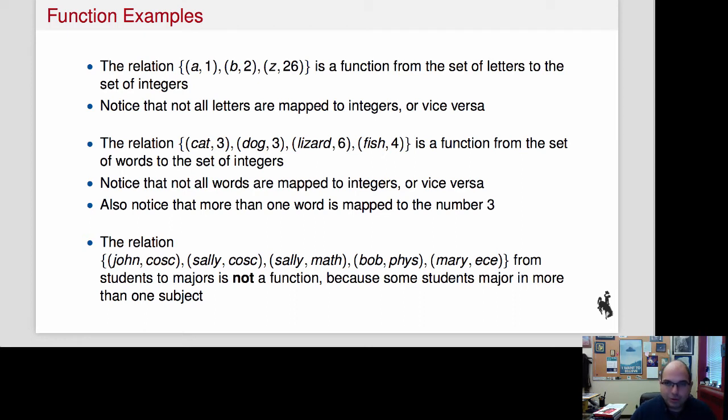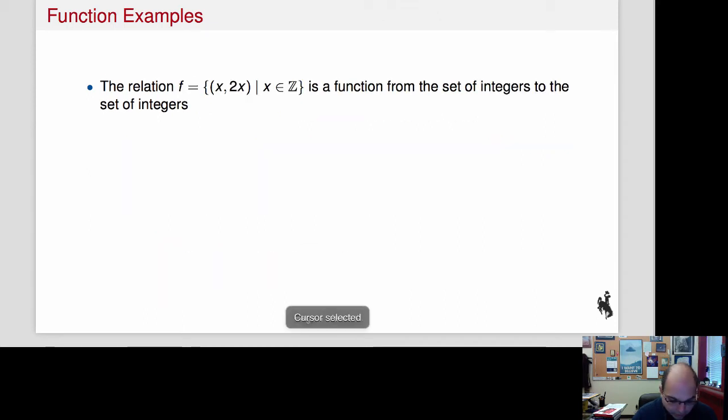Now, here's one more relation. This has students and majors. So we have John in computer science, Sally in computer science, Sally in math, Bob in physics, Mary in ECE. And here, this is actually not a function. And the reason that it's not a function is because of Sally. Notice that Sally is in cosi and math. So that's two values that are associated with Sally. That is not okay.